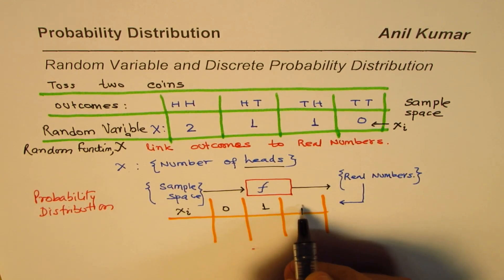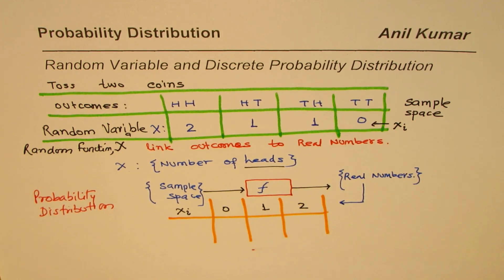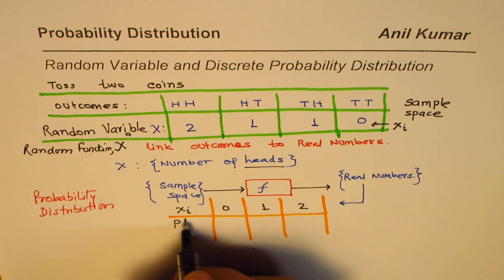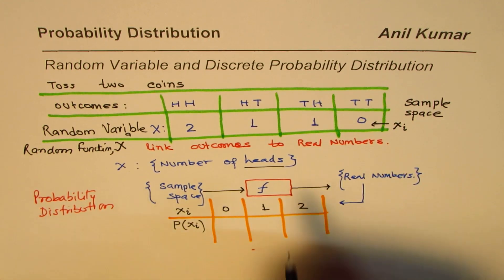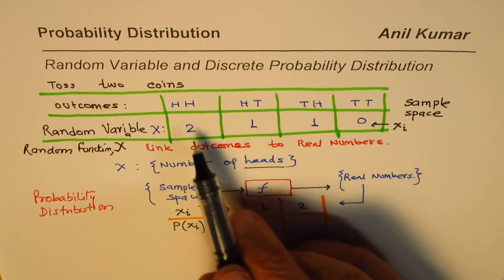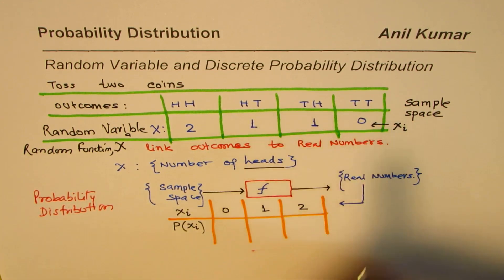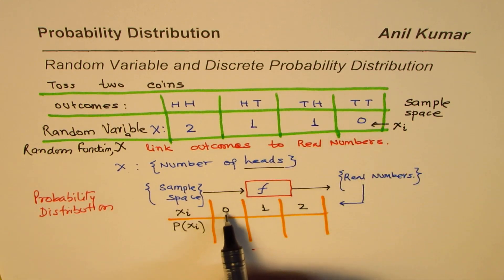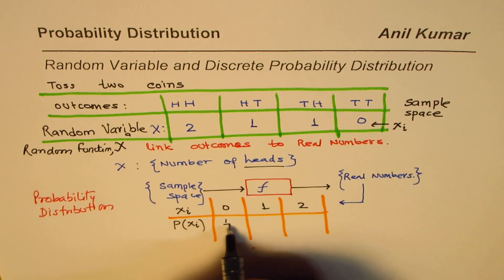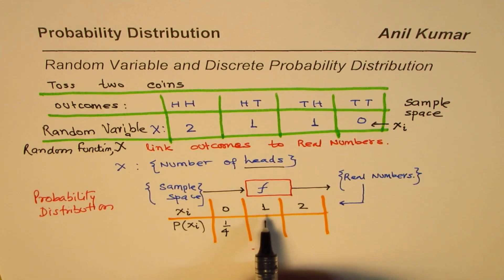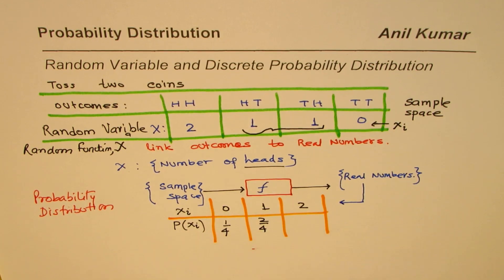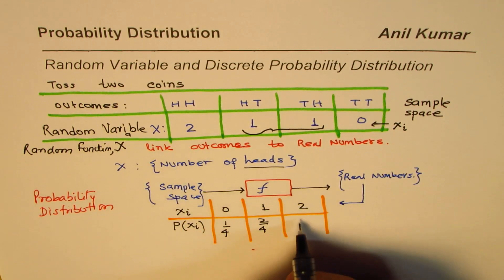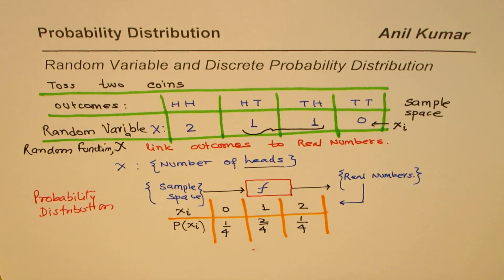If you are tossing two coins, you could have zero heads, one head, or two heads. There are four possible outcomes. The probability of getting zero heads is 1 out of 4. The probability of getting one head is 2 out of 4. The probability of getting two heads is 1 out of 4.